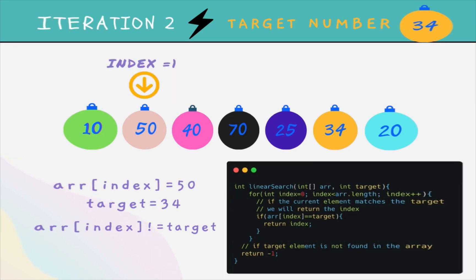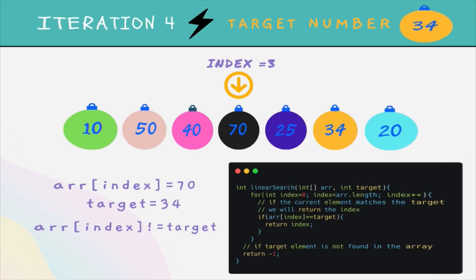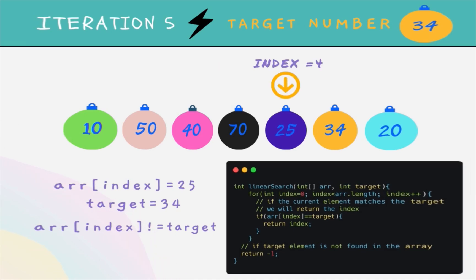Now the index has become one. Array at index one is equal to 50, which is not equal to 34, so we increment the index again. Now array at index two is equal to 40, also not equal to target, so we increment again. Now array at index three is equal to 70, also not equal to our target, so we increment the index again.